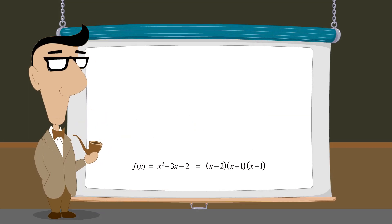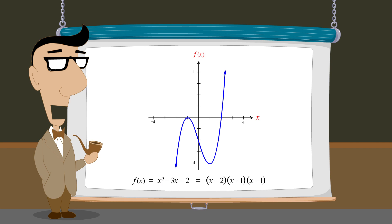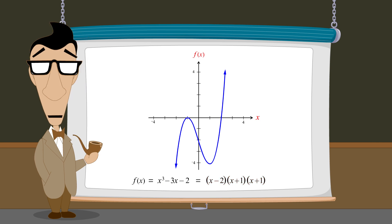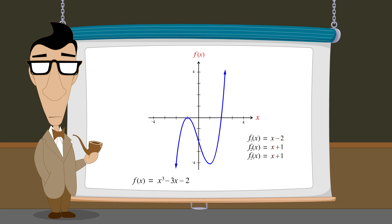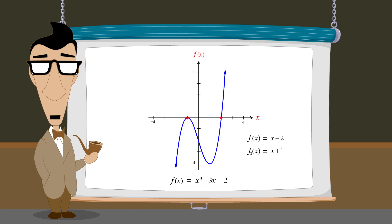This function f of x is defined by the trinomial x-cubed minus 3x minus 2, and we have seen that this trinomial has three factors: x minus 2, x plus 1, and x plus 1. We can think of these factors as separate linear functions multiplied together to create the function f of x. And as we have seen in previous lectures, the zeros of a polynomial function are identical to the zeros of its factors.